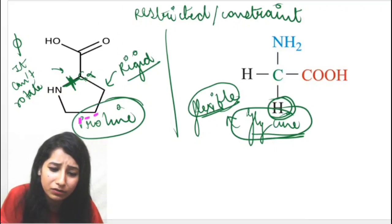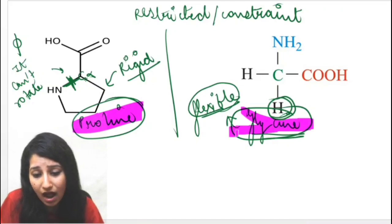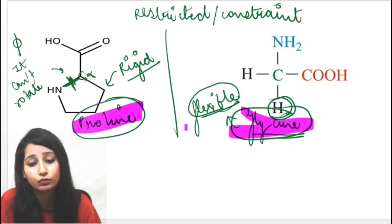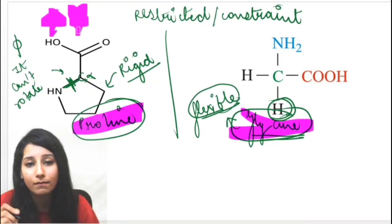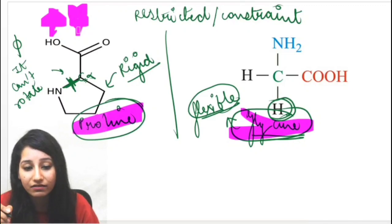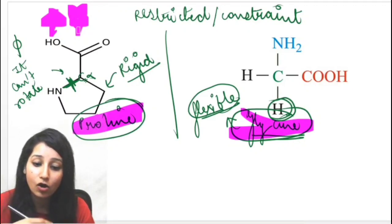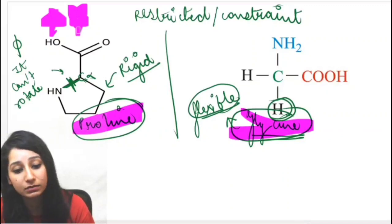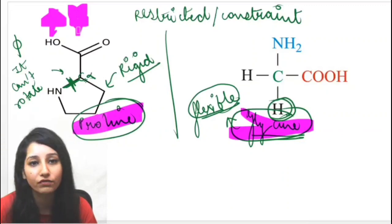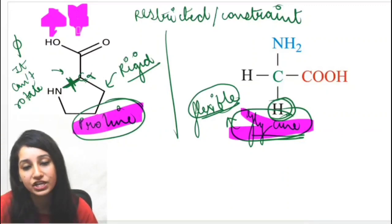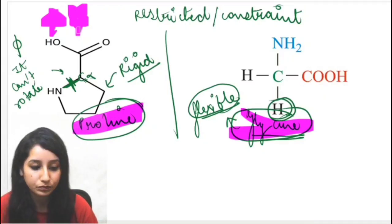Very important point for exams: questions are frequently asked about these two amino acids. Proline and glycine are restricted in alpha helical structure formation — glycine due to its high flexibility, and proline due to its low flexibility, low rotation, and rigid ring.